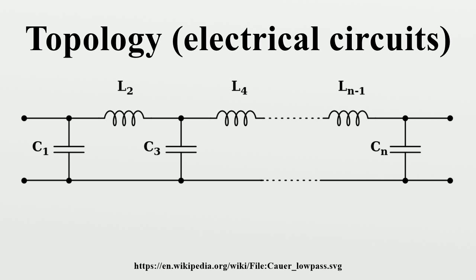For a network with two branches, there are only two possible topologies: series and parallel. Even for these simplest of topologies, there are variations in the way the circuit can be presented. For a network with three branches there are four possible topologies. Note that the parallel series topology is another representation of the delta topology discussed later. Series and parallel topologies can continue to be constructed with greater and greater numbers of branches ad infinitum. The number of unique topologies obtainable from n branches is 2^(N−1), and the total number with no more than n branches is also 2^(N−1).